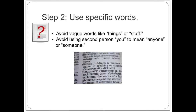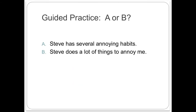Step two is to use specific words to convey your ideas, so avoid words like 'things' and 'stuff.' Also, most instructors do not allow second person 'you' because the word is often used incorrectly to refer to anyone or someone. Let's practice by choosing which sentence, A or B, is the better choice because it has more specific information.